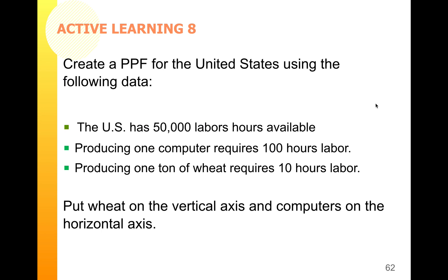If you graph these points, you get a graph for the United States — and that's what you're going to do for your next active learning, number eight. Pretend this example is for the United States and draw your own production possibility curve. Make sure you put a title on it, put wheat on the vertical axis and computers on the horizontal axis, use the data to draw the PPF, and make sure your line stretches all the way from one axis to the other with the maximum values marked.